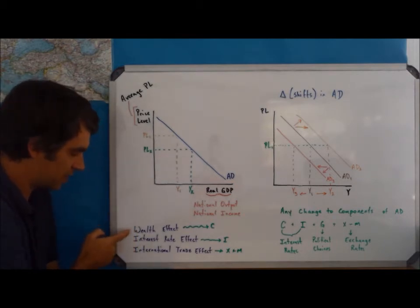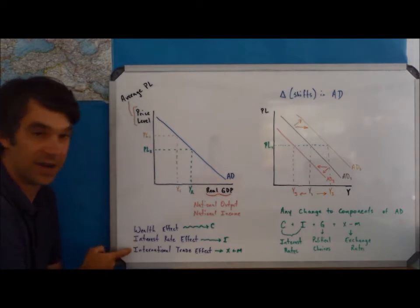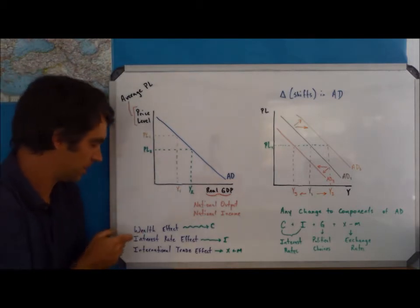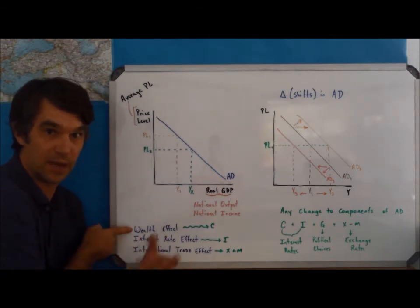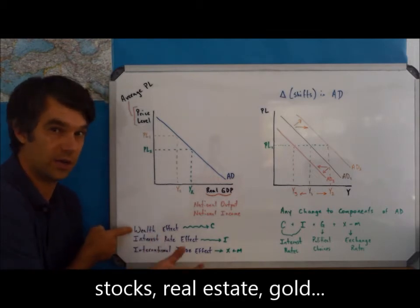Here's why. When we explain why aggregate demand is negatively sloped, we really look at three components or three reasons for that. They are the wealth effect, the interest rate effect, and the international trade effect. Let's go through each of these just one by one.